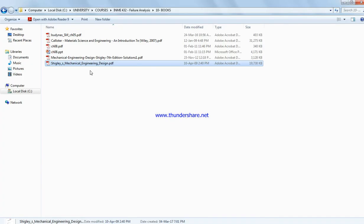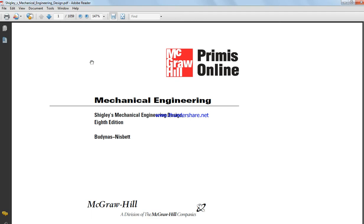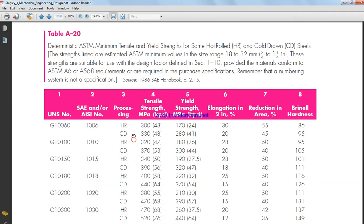So the first thing we have to do is go to the book and open the PDF for 1015. The component is 1015 HR hot rolled. As you can see here, the tensile strength is 50 ksi and the yield is 27.5 ksi.